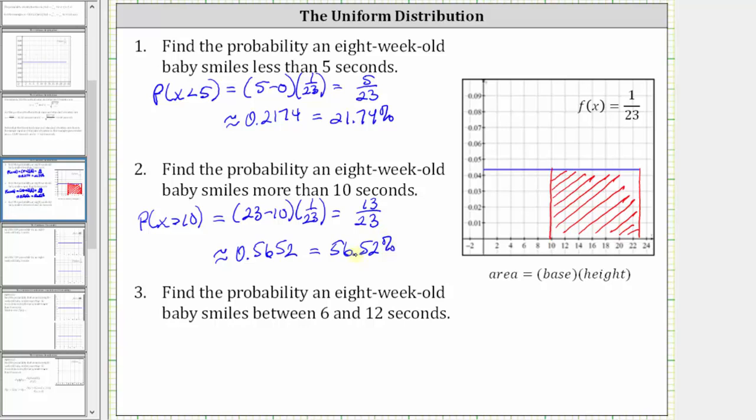And for the last example, we're asked to find the probability an eight-week-old baby smiles between 6 and 12 seconds. This is the probability that x is greater than 6 and less than 12. Once again, let's go ahead and shade this area under the probability density function.